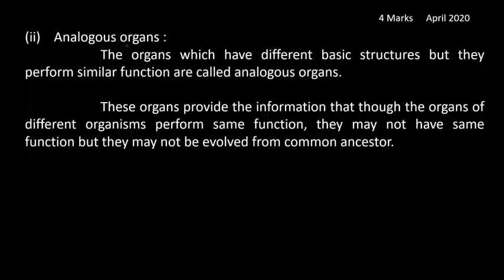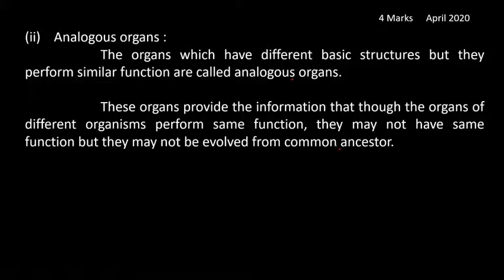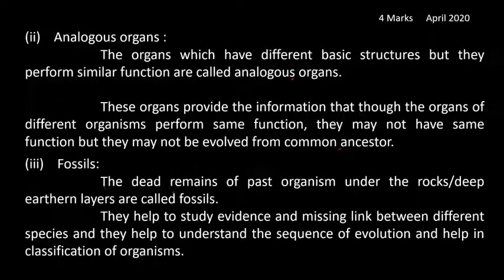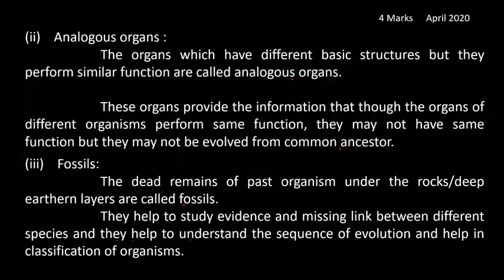The second evidence is analogous organs — organs which have different basic structures but perform similar functions. These organs indicate that though organs of different organisms perform the same function, they may not have evolved from a common ancestor. The third evidence is fossils — the dead remains of past organisms preserved under rocks or deep earth layers. They help study the missing link between different species and help understand the sequence of evolution and classification of organisms.